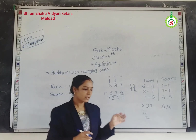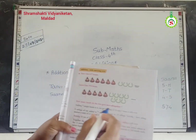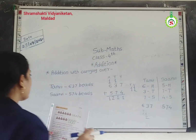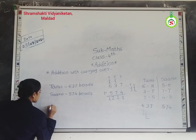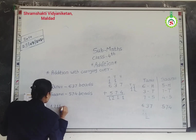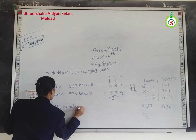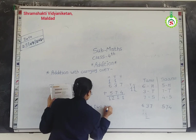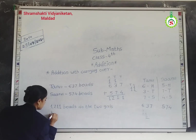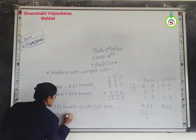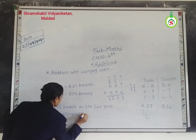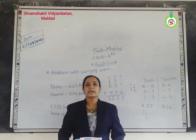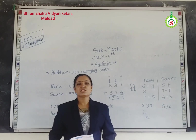Students, see in this book. The question is: how many beads do the two girls have altogether? Our answer is one thousand, two hundred and eleven. Tanvi and Sanvi, the two girls, have 1211 beads altogether. So here we learned addition with carry over. In the next lecture we will learn the remaining part of this chapter. Thank you.